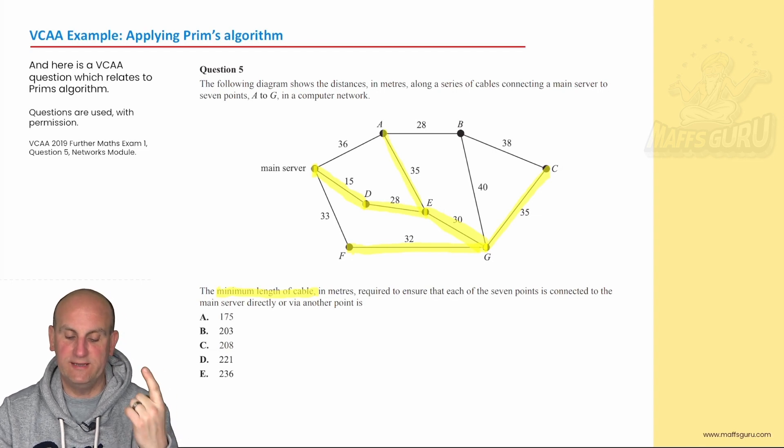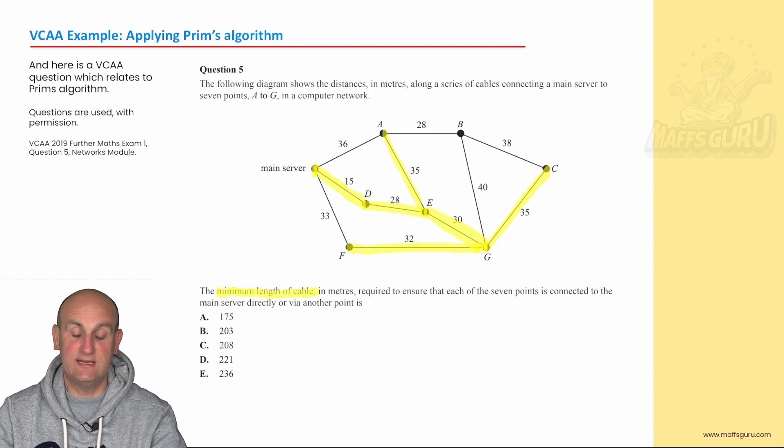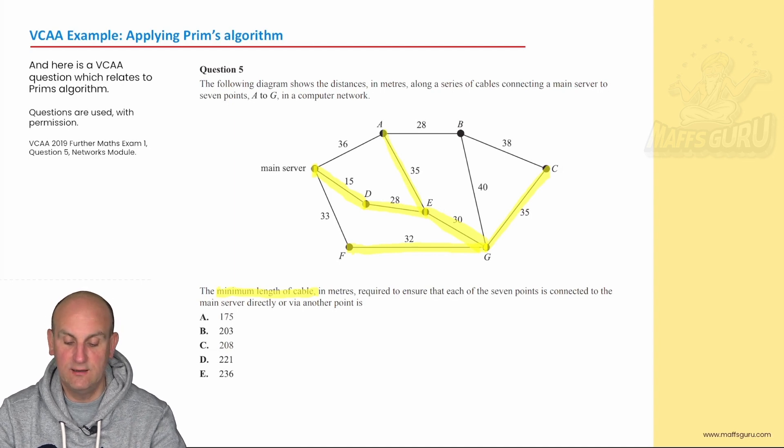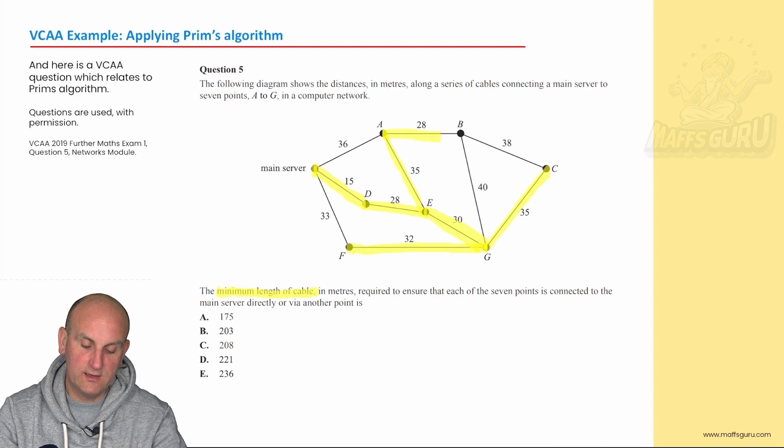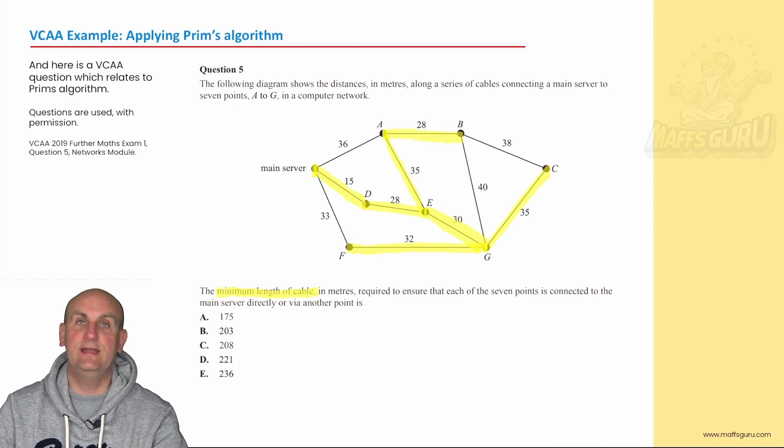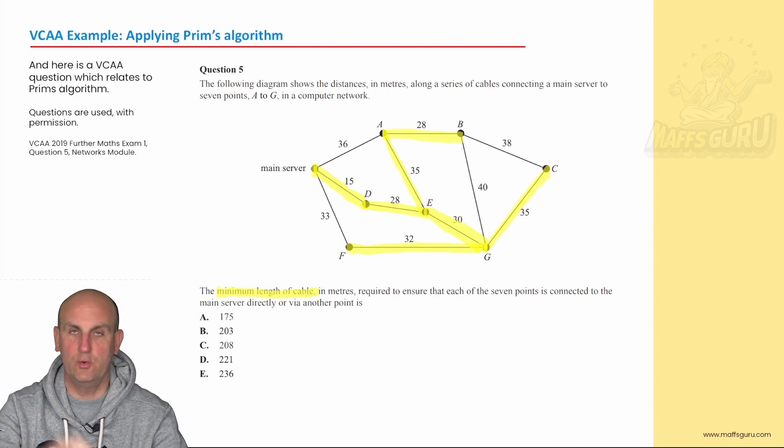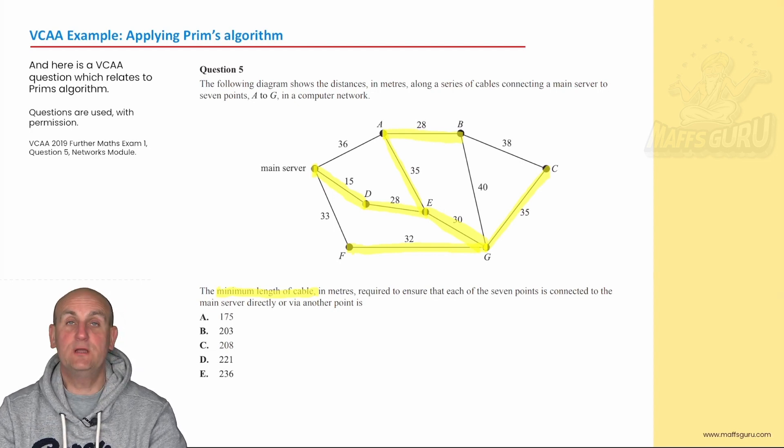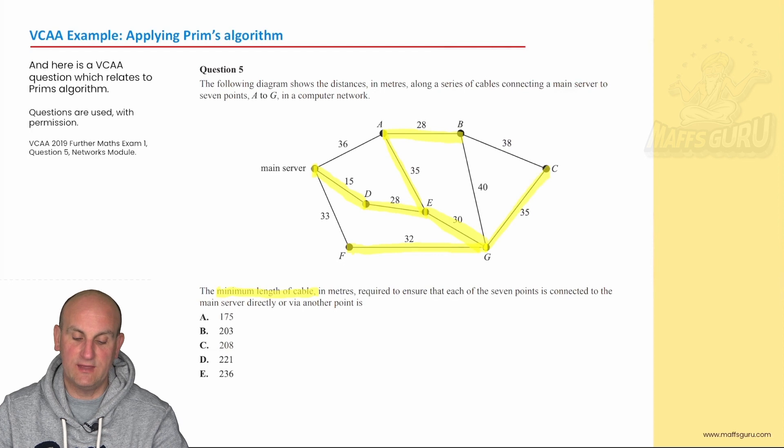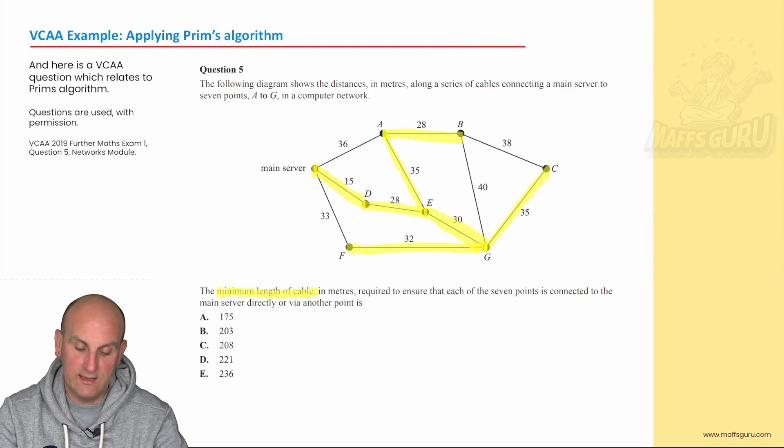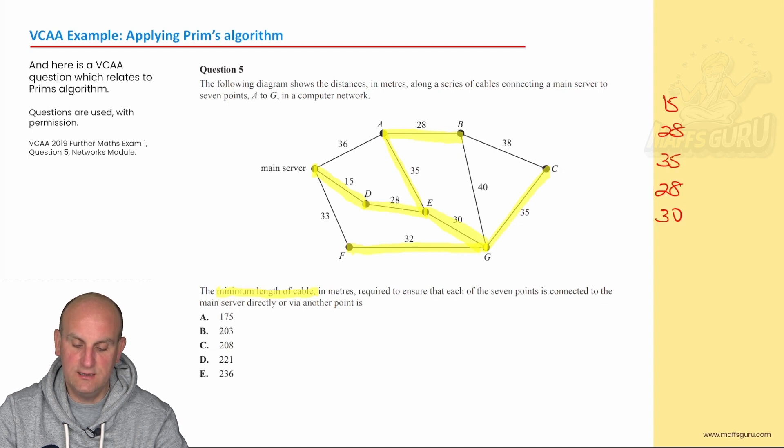I've only got one more point to connect. So to get to B, I'm either going to take a 28, a 40, or a 38. And I think in that situation there, it's going to be a 28. Now, again, it shouldn't matter where you start. You should always get exactly that thing there. And the question goes on to say, what is the minimum length of cable? So this is where you would add them all together. So let me see. What have we got? We've got 15. We've got 28, 35, 28, 30, 32, and 35.